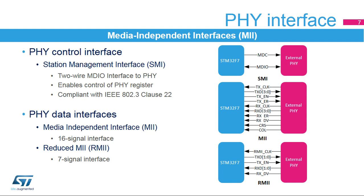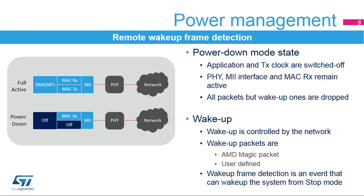Two types of interfaces are supported by the peripheral, both supporting full and half-duplex operations at 10 or 100 megabits per second. These interfaces are the classical media-independent interface, or MII, that requires 16 signals between both devices, and the reduced MII that requires only 7 signals, allowing I/O saving.